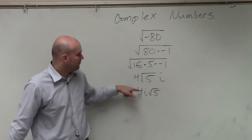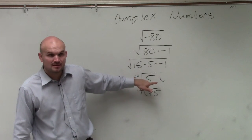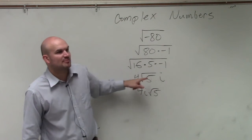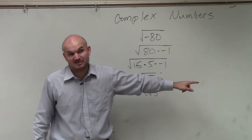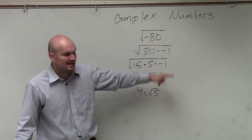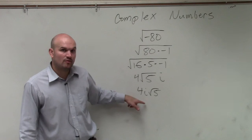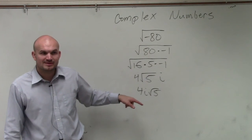We prefer to have 4i square root of 5. This is still correct. But we don't want you to make the mistake of putting the square root sign over the i, because that would be wrong. It's not square root of i, it's i. So therefore, we write it like this, 4i square root of 5. Does that make sense?